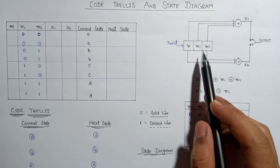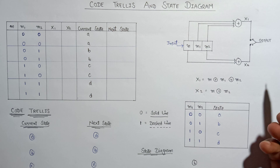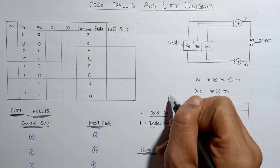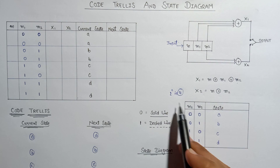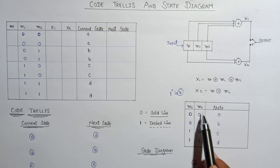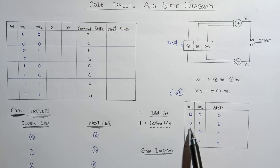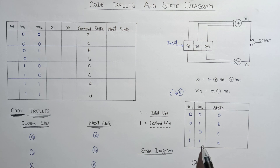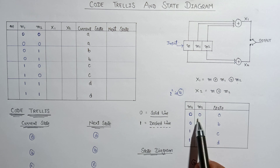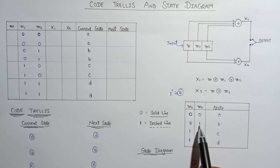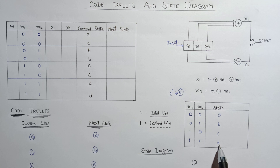We know that there are two message bits representing the previous two message bits. That's why there will be 2 to the power 2 combinations possible, that is 4, ranging from 00 to 11. The four combinations are 00, 01, 10, and 11. Let us represent these four possibilities by the help of states: 00 is representing state A, 01 is representing state B, 10 is representing state C, and 11 is representing state D.